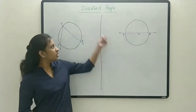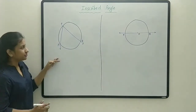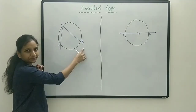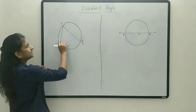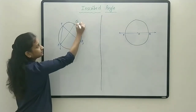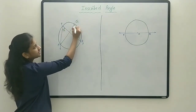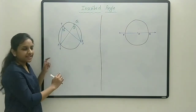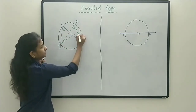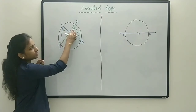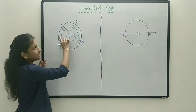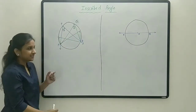Now let's see two corollaries based on the inscribed angle theorem. The first corollary: angle APB is the inscribed angle for intercepted arc AB. This angle equals any other angle inscribed in the same arc — they are congruent. So if this angle is 50 degrees, any other angle inscribed in the same arc is also 50 degrees. Angles inscribed in the same arc are congruent.